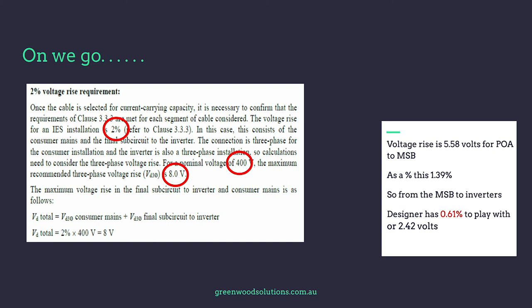From the MSB to the inverters, we've effectively got 0.61% to play with — or 2.42 volts. Be prudent and make sure you understand AS4777.1 and also get really familiar with AS3008.